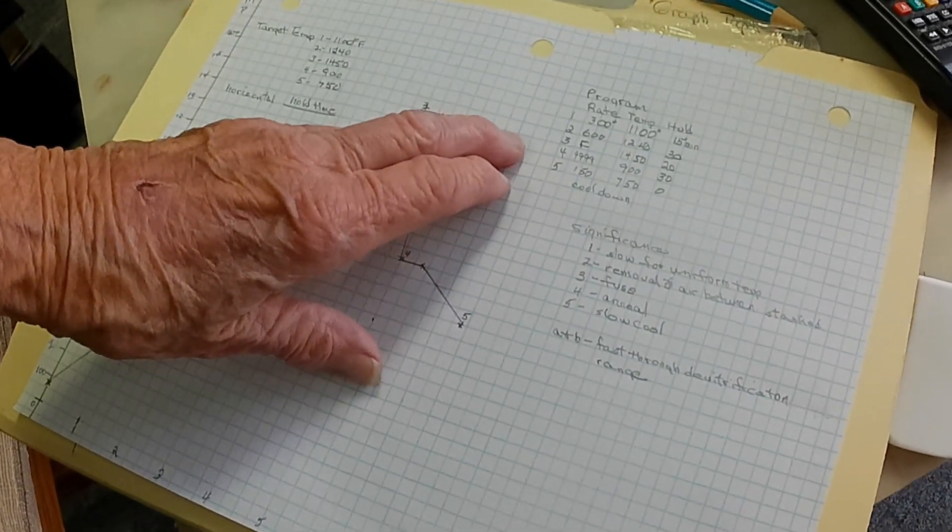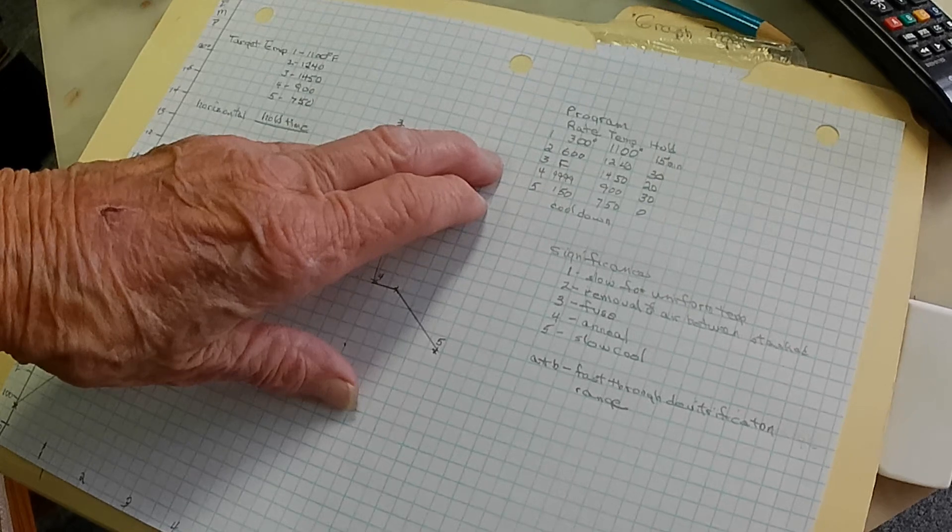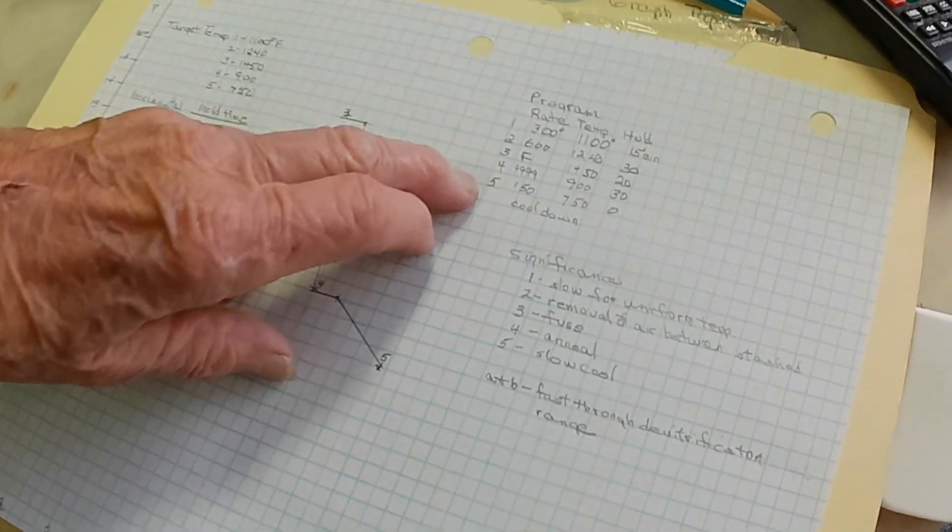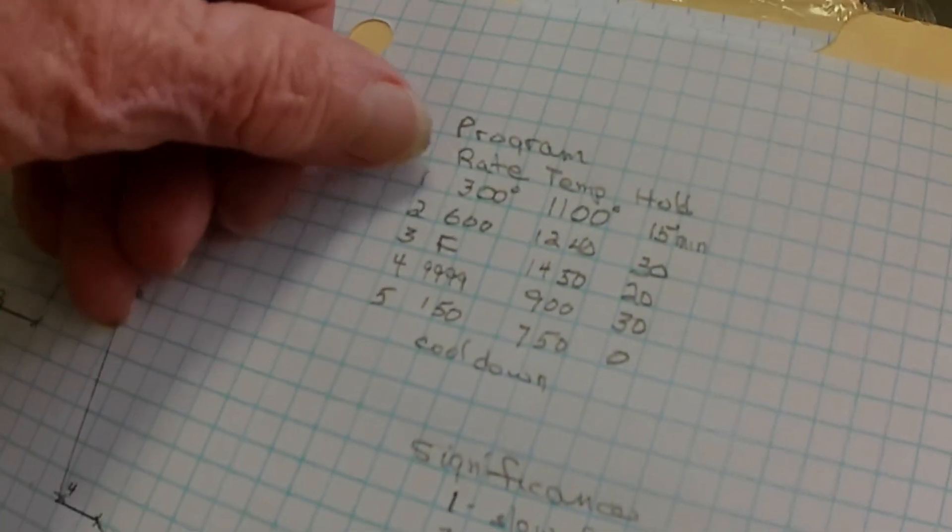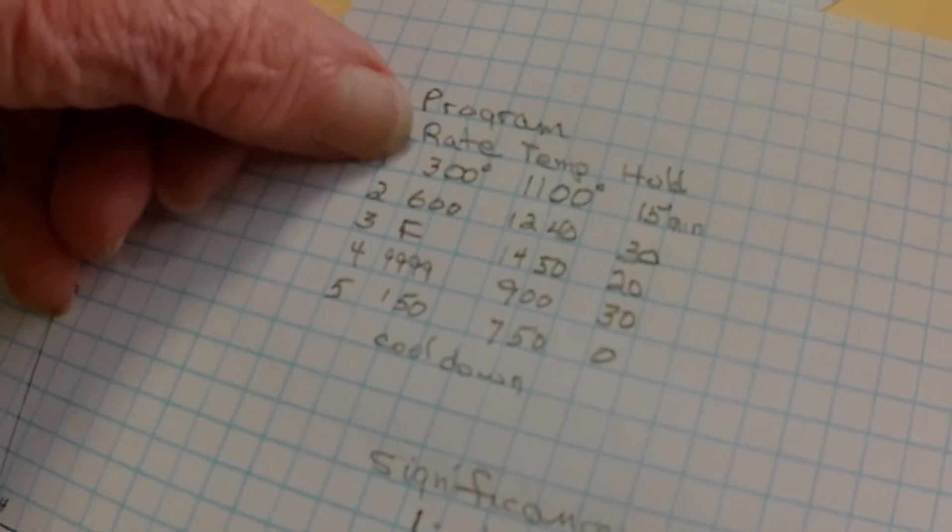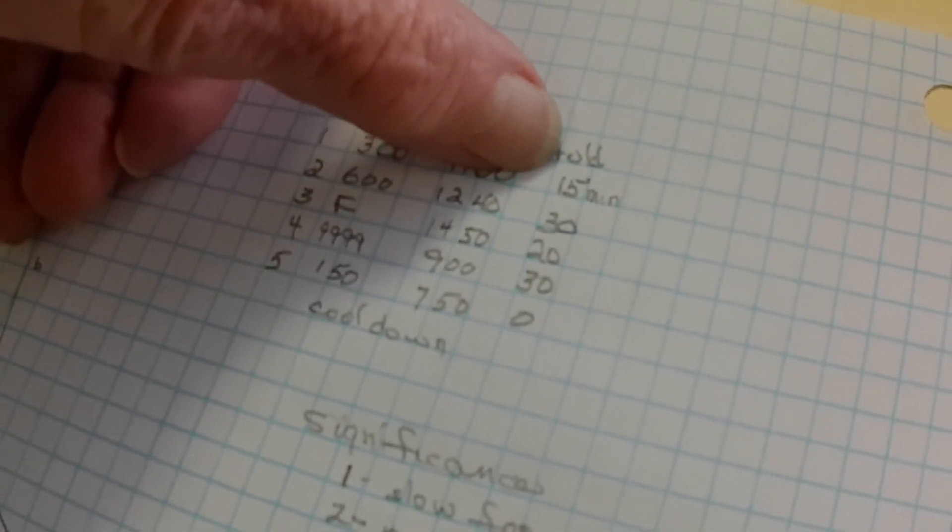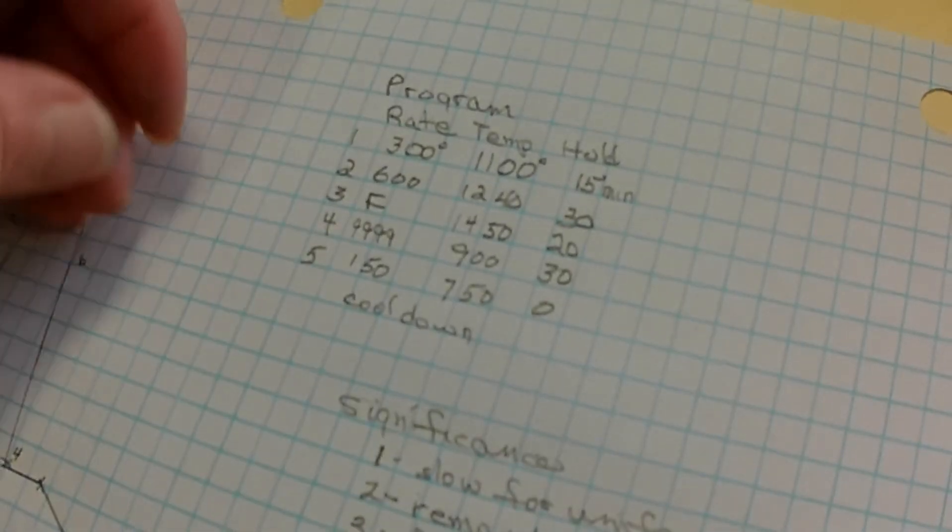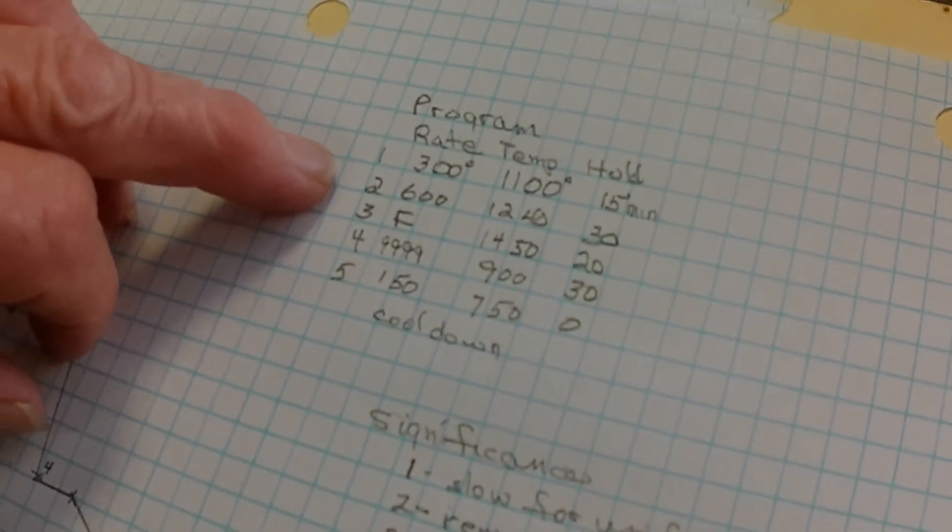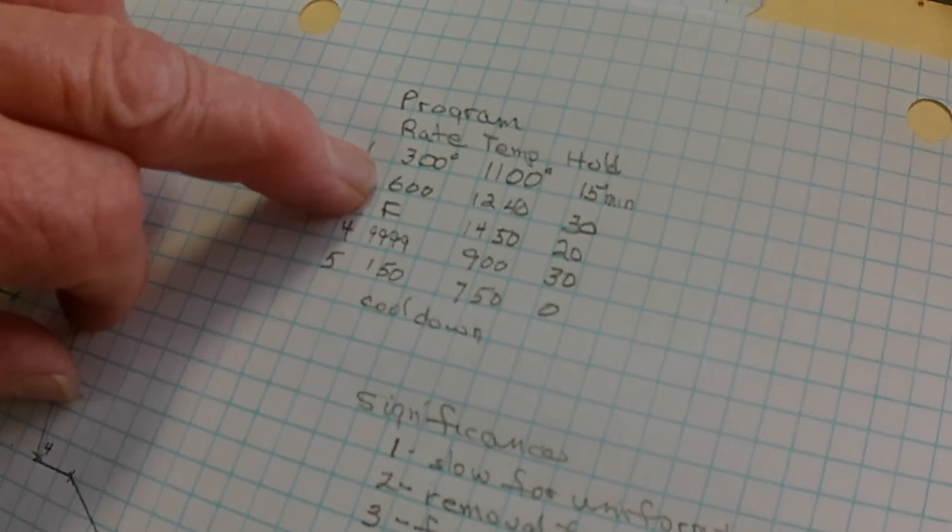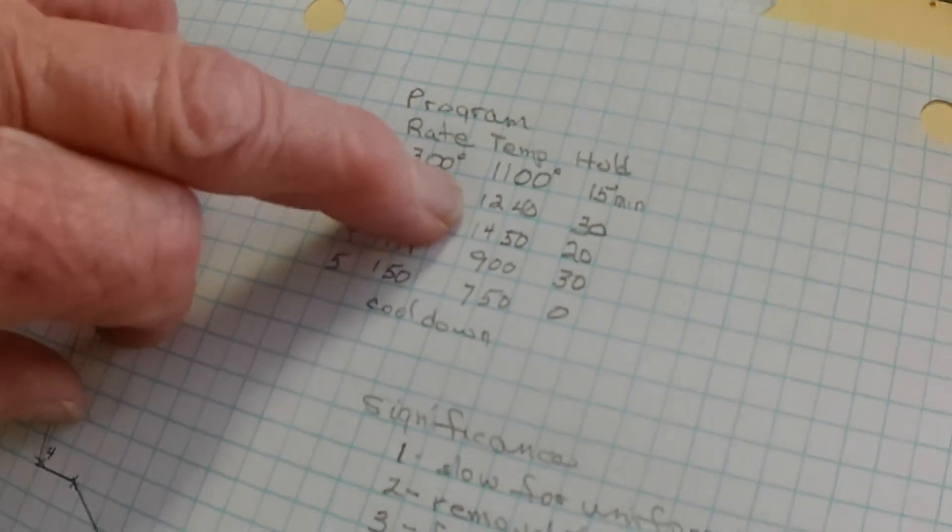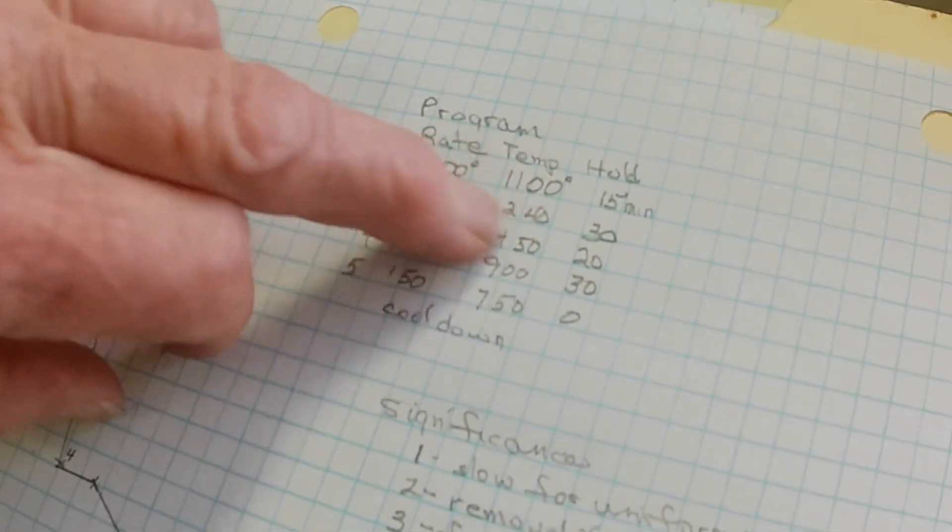Here's the program that we just put in the kiln. It's five steps. The rate is 300 degrees per hour to 1100. We're going to hold it for 15 minutes. Two is 600 degrees per minute. We go to 1240 and hold it for 30 minutes.